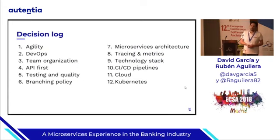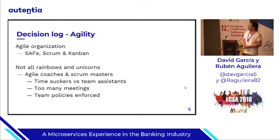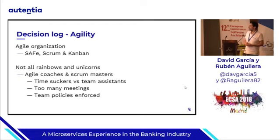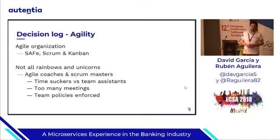In the following slides, we are going to walk through the decisions regarding architecture and organization taken during this project. Regarding agility, even though we have been using standard methodologies, not everything was happiness. Some agile coaches forgot their role as team assistants and instead behaved as time suckers. There were also problems with Scrum ceremonies that took too much time. And the upper layers of the organization sometimes tried to push policies that were against one of the core extreme programming values, which is team self-organization.